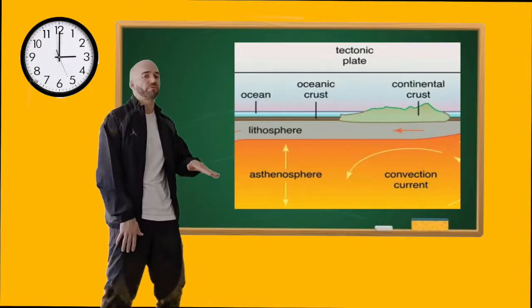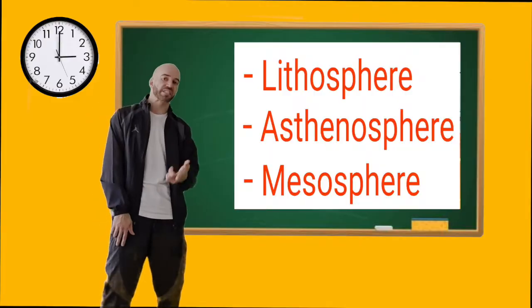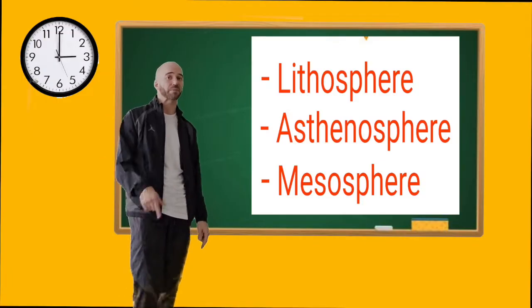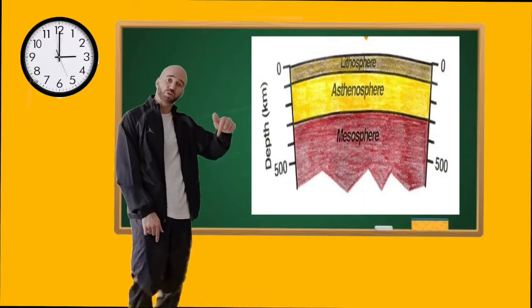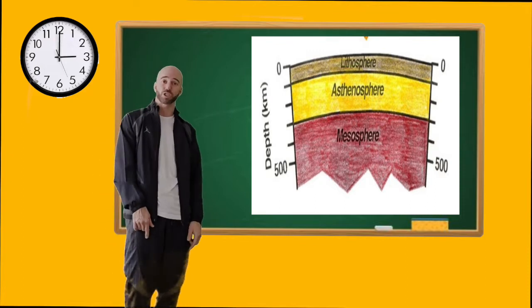They drift over the asthenosphere, which is the center layer of the mantle, holding chamber of the earth's magma, semi-liquid like molten plastic. Moving down to the mesosphere, it's the mantle's deepest layer. Intense pressure and extreme heat turns semi-liquid to solids here.